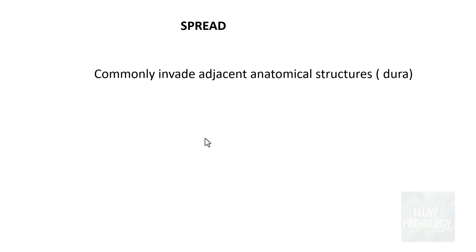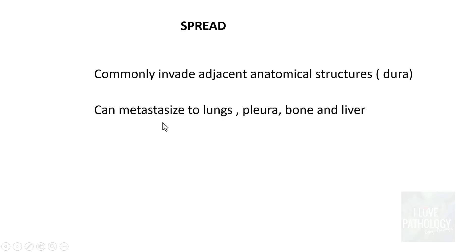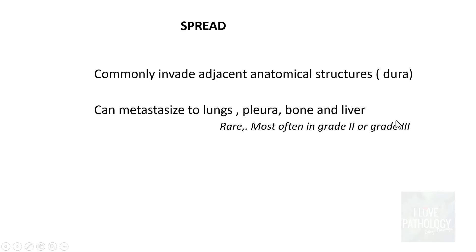Meningiomas commonly invade adjacent anatomical structures. Since the dura is attached to the arachnoid and meningiomas arise from the arachnoid layer, it is easy for them to invade the adjacent dura. They can sometimes metastasize to the lungs, pleura, bone, and liver — findings more commonly seen in grade 2 and especially grade 3 meningiomas.